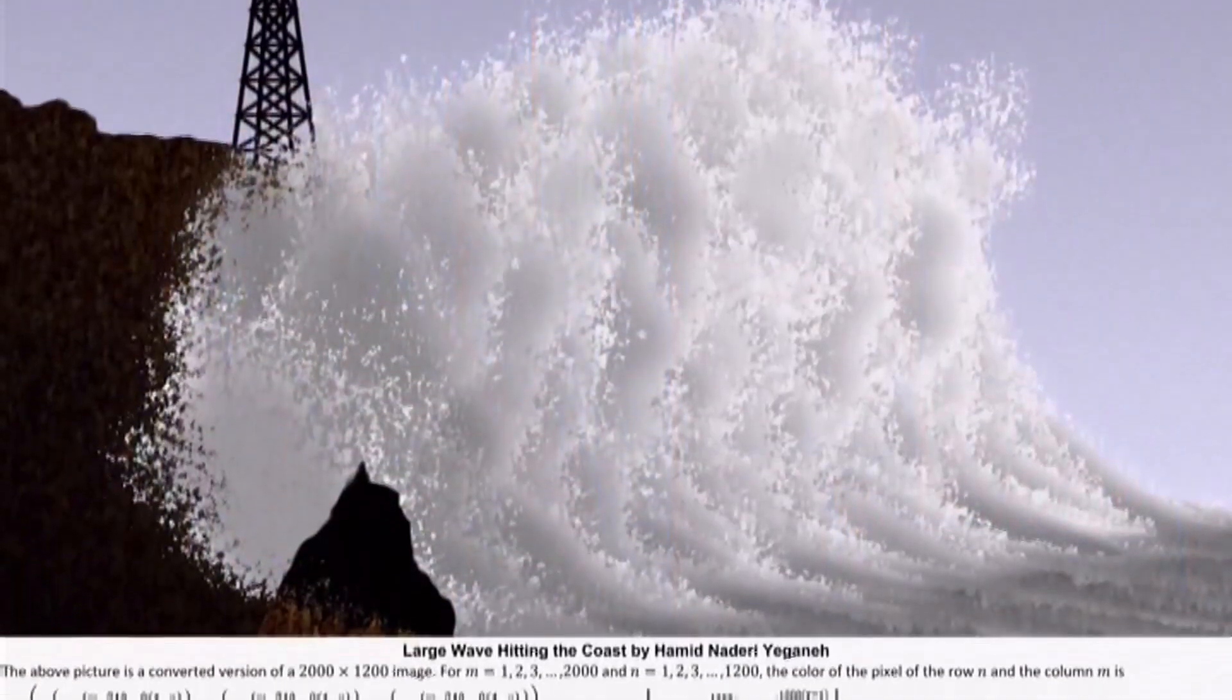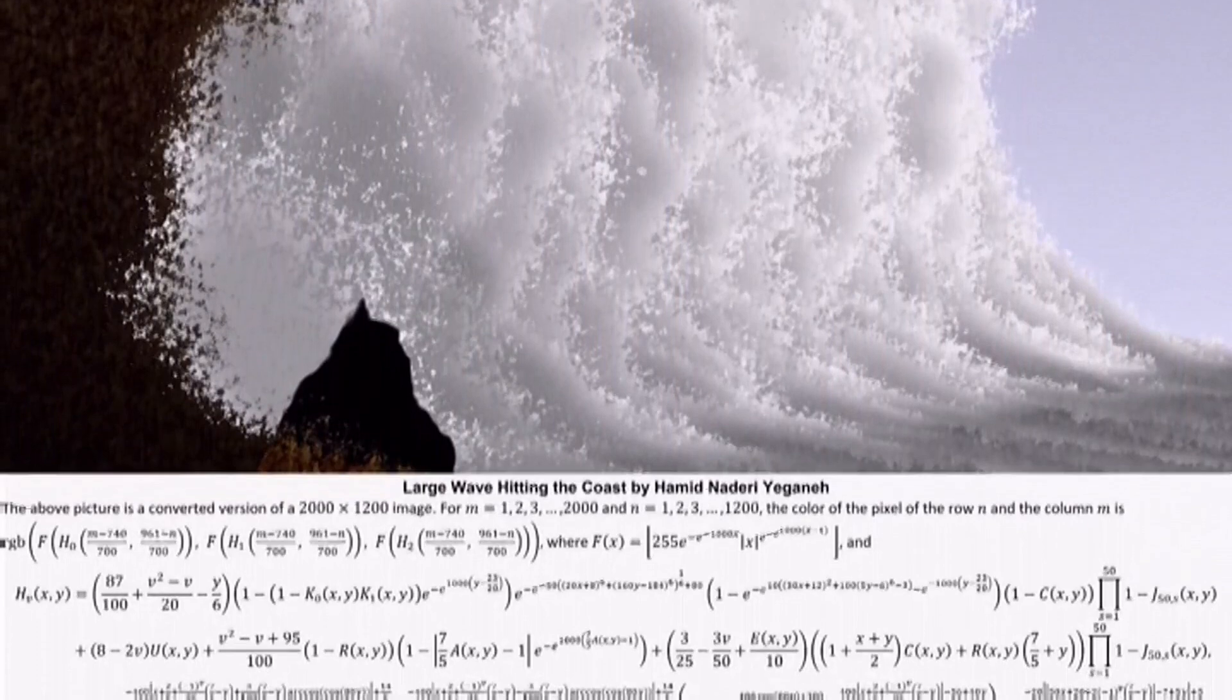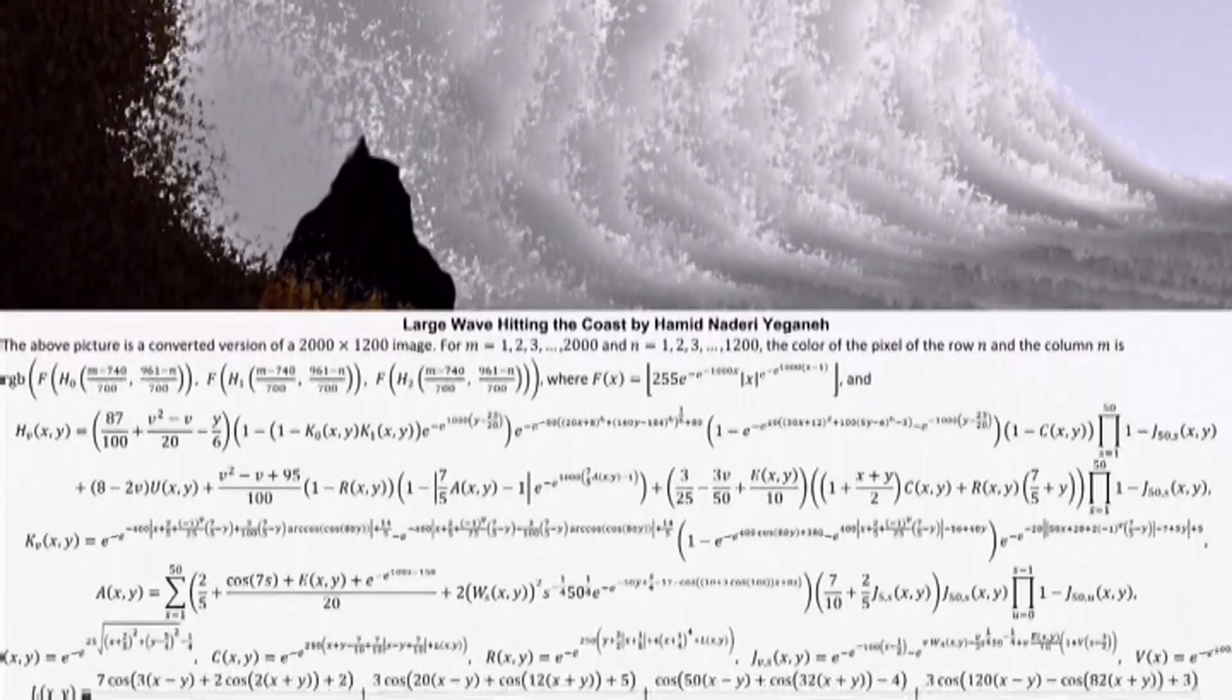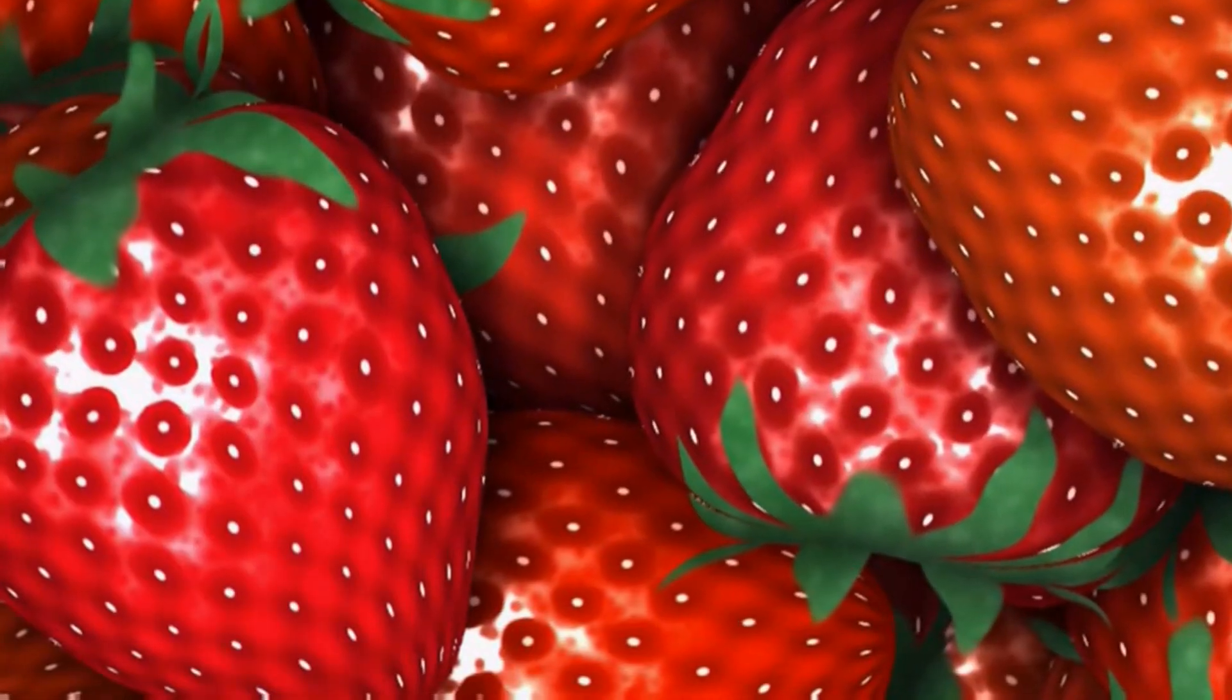OK, so here comes the maths lesson. If you could explain it to someone who doesn't understand any equations, how would you do that? Every digital image is a set of pixels, and each pixel has a colour. And each colour is defined by three numbers.